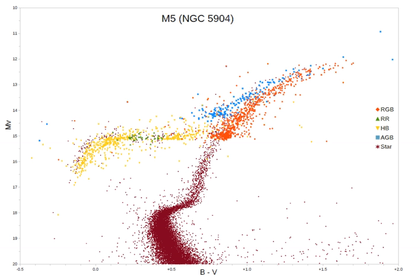After exhausting their core hydrogen, stars leave the main sequence and begin fusion in a hydrogen shell around the helium core and become giants on the red giant branch. In stars with masses up to 2.3 times the mass of the Sun, the helium core becomes a region of degenerate matter that does not contribute to the generation of energy. It continues to grow and increase in temperature as the hydrogen fusion in the shell contributes more helium.